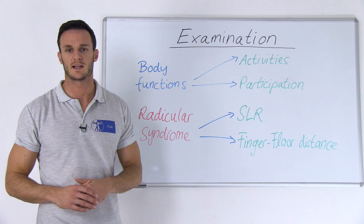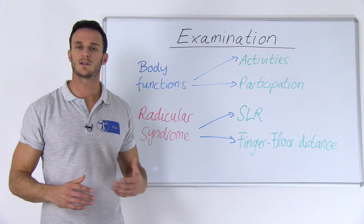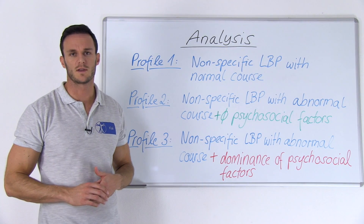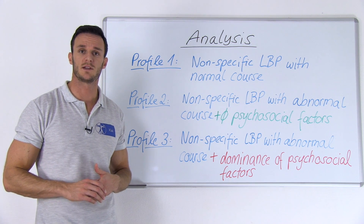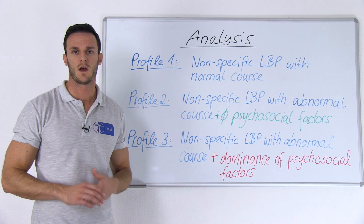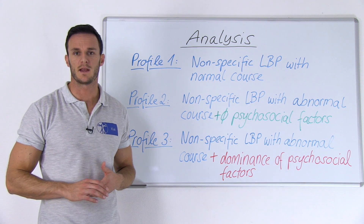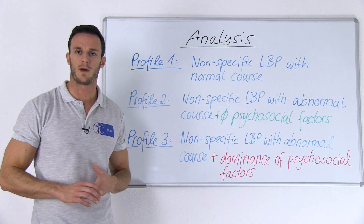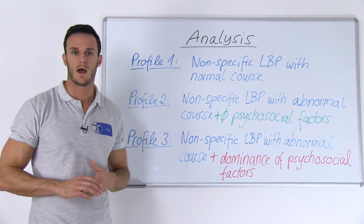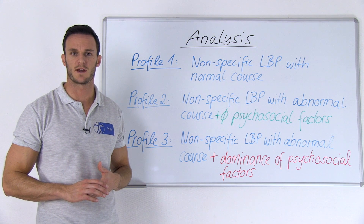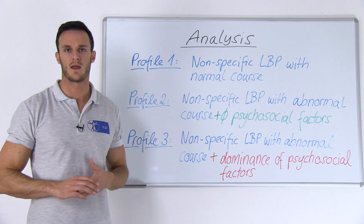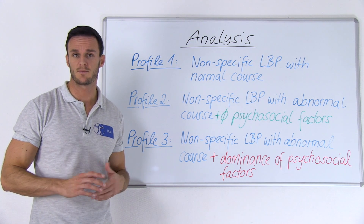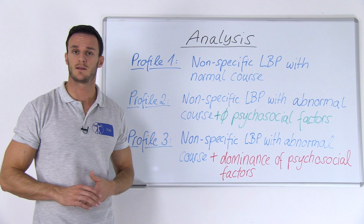If you could rule out red flags and a specific cause for low back pain, you can assume that your patient has specific low back pain. Based on your whole diagnostic process, you should be able to place your patient in one of the three following profiles. Profile one: non-specific low back pain with normal course of recovery. Profile two: non-specific low back pain with abnormal course of recovery, but without the dominant presence of psychosocial factors impeding the recovery. And profile three: non-specific low back pain with abnormal course and with dominant presence of psychosocial factors that impede the recovery.